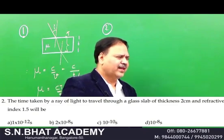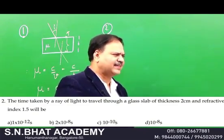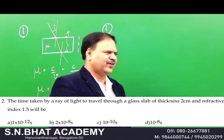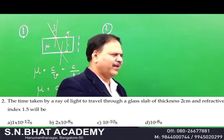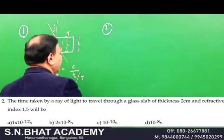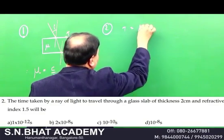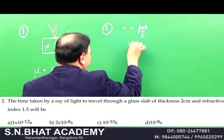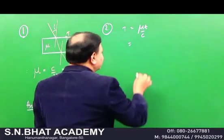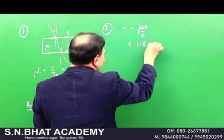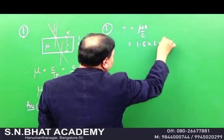Question number 2: the time taken by a ray of light to travel through glass of thickness 2 cm and refractive index 1.5. This is the same concept. Using the formula T = μt/c, refractive index is 1.5 and thickness is 2×10⁻² m.